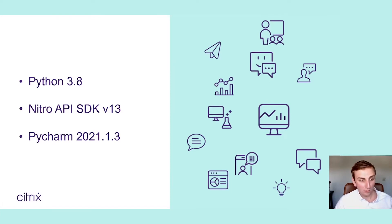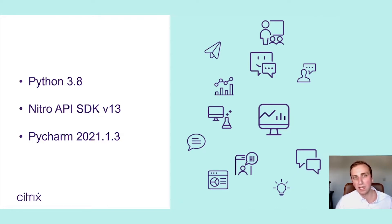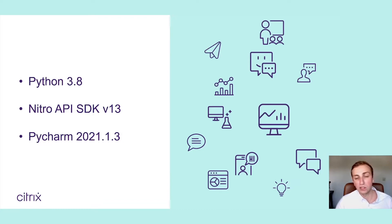I'm on Python version 3.8 — if you use 3.9 that's also fine. Nitro API SDK version 13. Please keep in mind that your ADC should correlate with the version of the SDK you are using. If you're on ADC version 12, make sure you're using SDK version 12. If you download the SDK from the ADC directly, the version will always be the proper one. I'm also using PyCharm as my IDE — you can use any IDE you like.